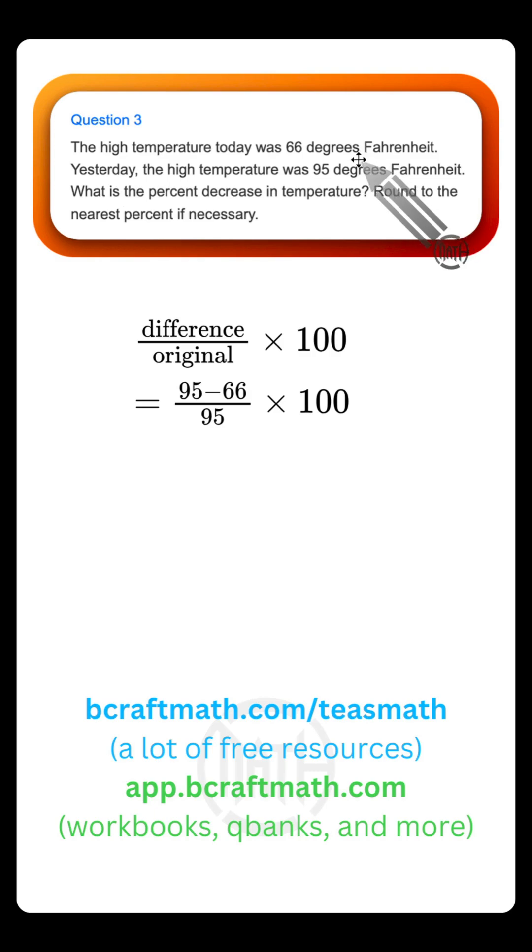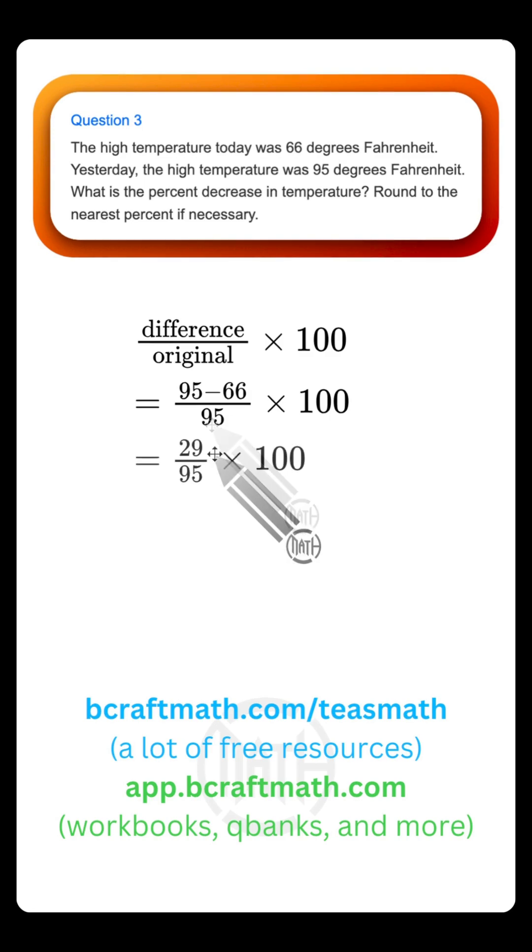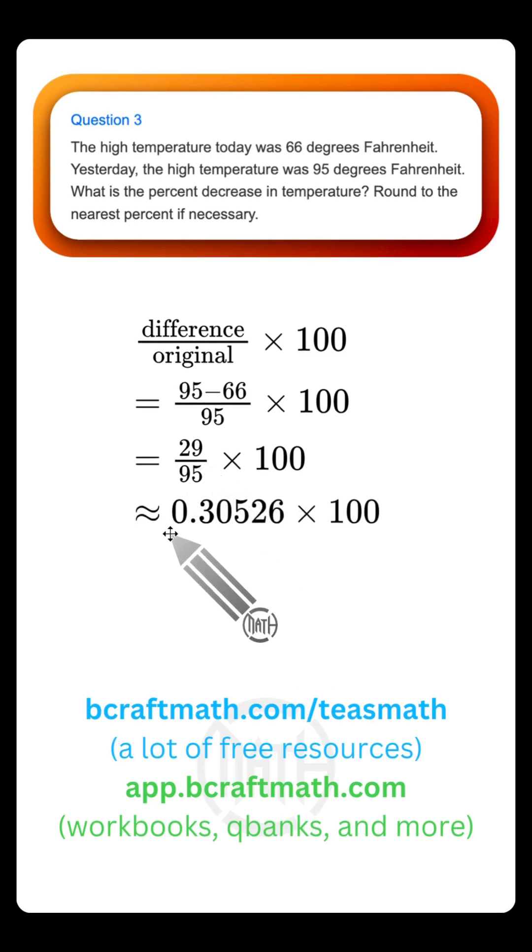Yesterday is the older value. Yesterday it was 95 degrees. That's why this original value, the original temperature, is 95. So in our next step, the 29 represents a 29 degree difference. We're dividing that by the original. Grab your calculator for this. It'll be approximately this decimal value.